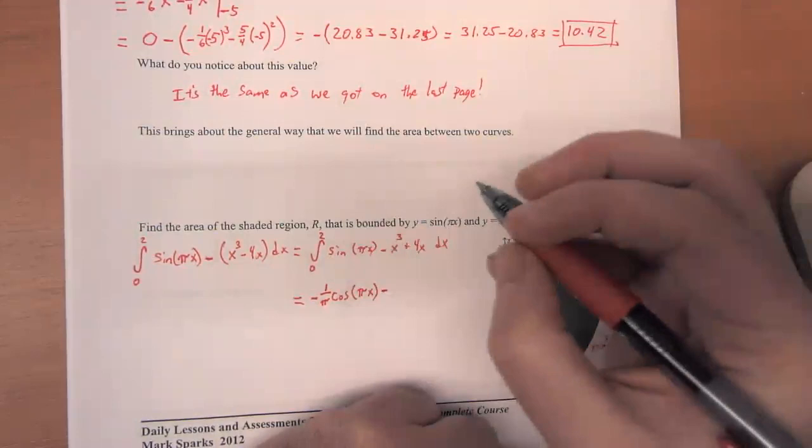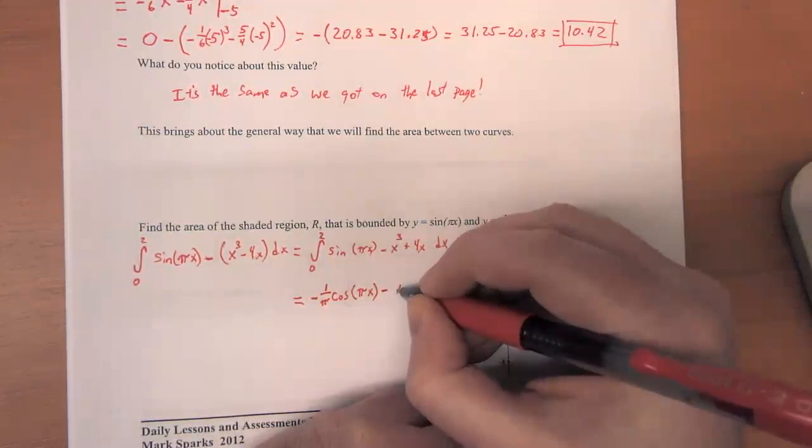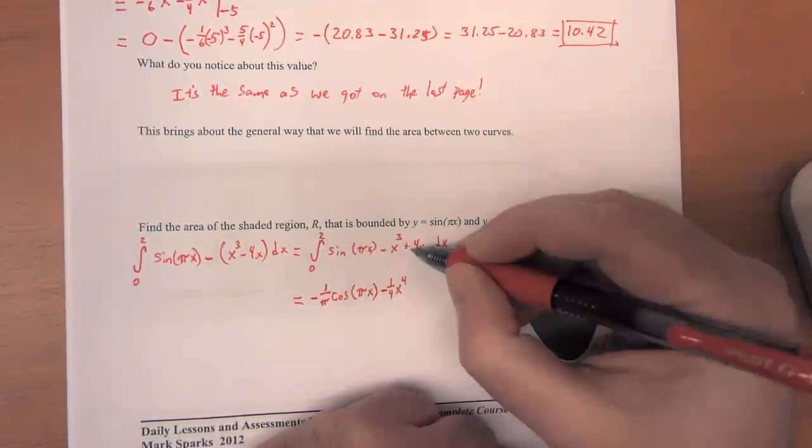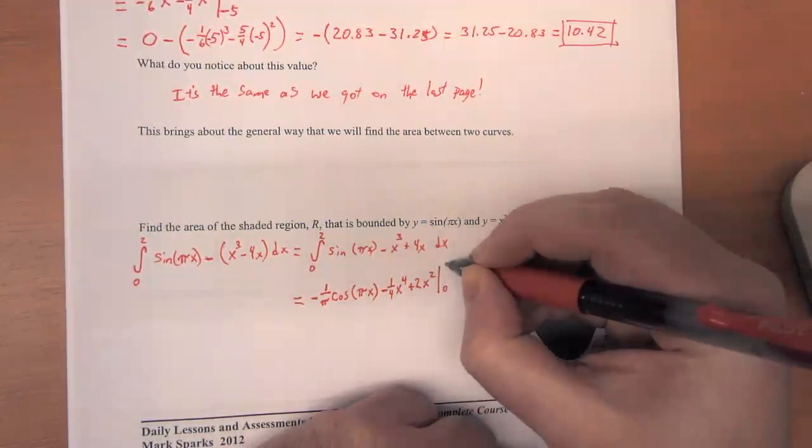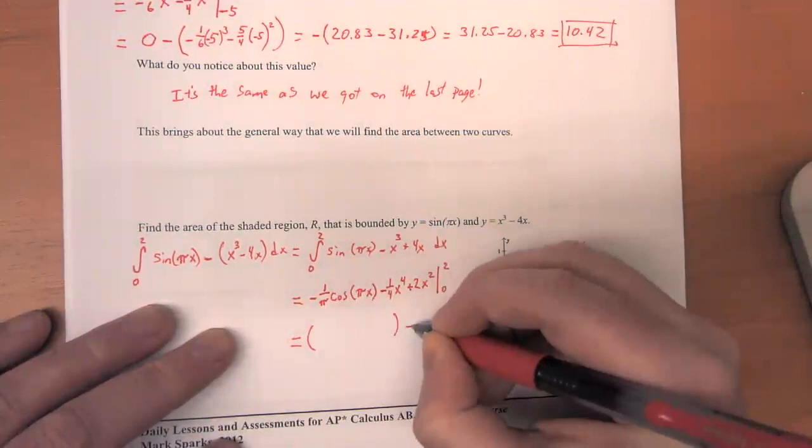The antiderivative of x cubed should be a lot less hairy for you, I think. By this point, I hope you're recognizing that that's just one quarter times x to the fourth. And the antiderivative of 4x is going to be 2x squared, 4 divided by 2 is 2. And we're going to evaluate that from 0 to 2.